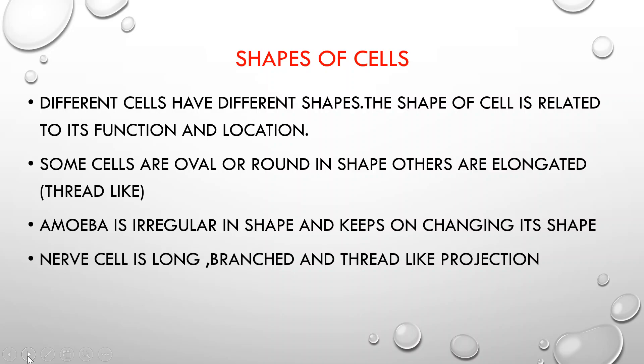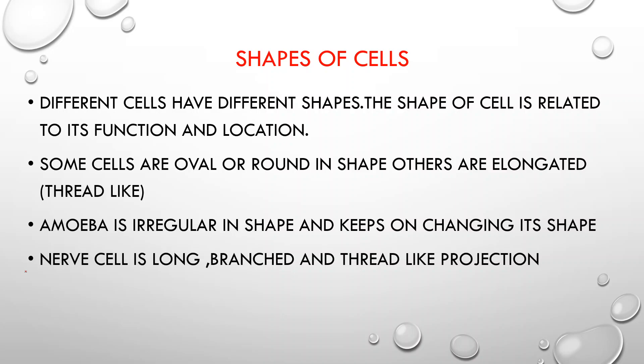Different cells have different shapes, and the shape of a cell is related to its function and location. For example, comparing an elephant and a mouse - it is not the case that the elephant's nerve cell is big and the mouse's nerve cell is small. Cells are classified based on their function, not the size of the organism.